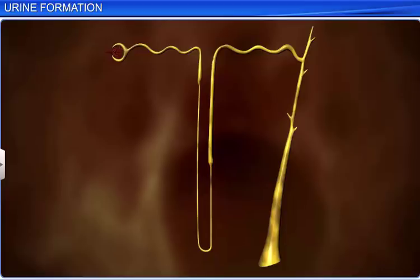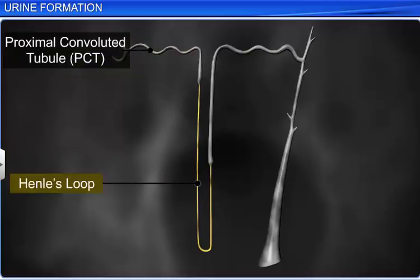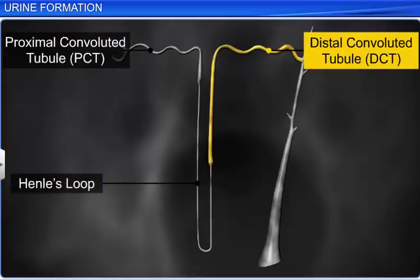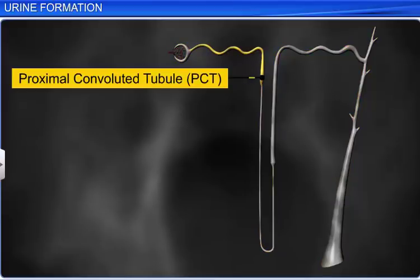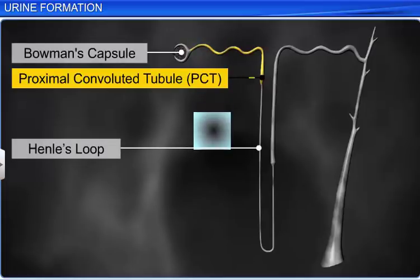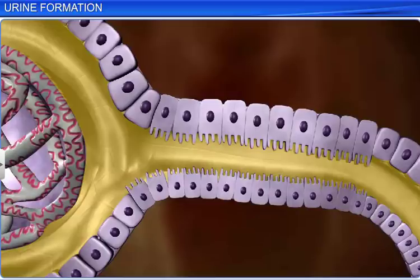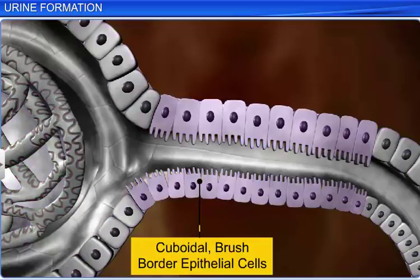This process of reabsorption and secretion occurs in different parts of the renal tubule, namely the proximal convoluted tubule or PCT, Henle's loop, and distal convoluted tubule. The collecting duct also takes part in the process. The proximal convoluted tubule is the section of the nephron situated between Bowman's capsule and Henle's loop. The glomerular filtrate from Bowman's capsule enters this tubule, which is lined by cuboidal brush border epithelial cells that help to increase the surface area for reabsorption.